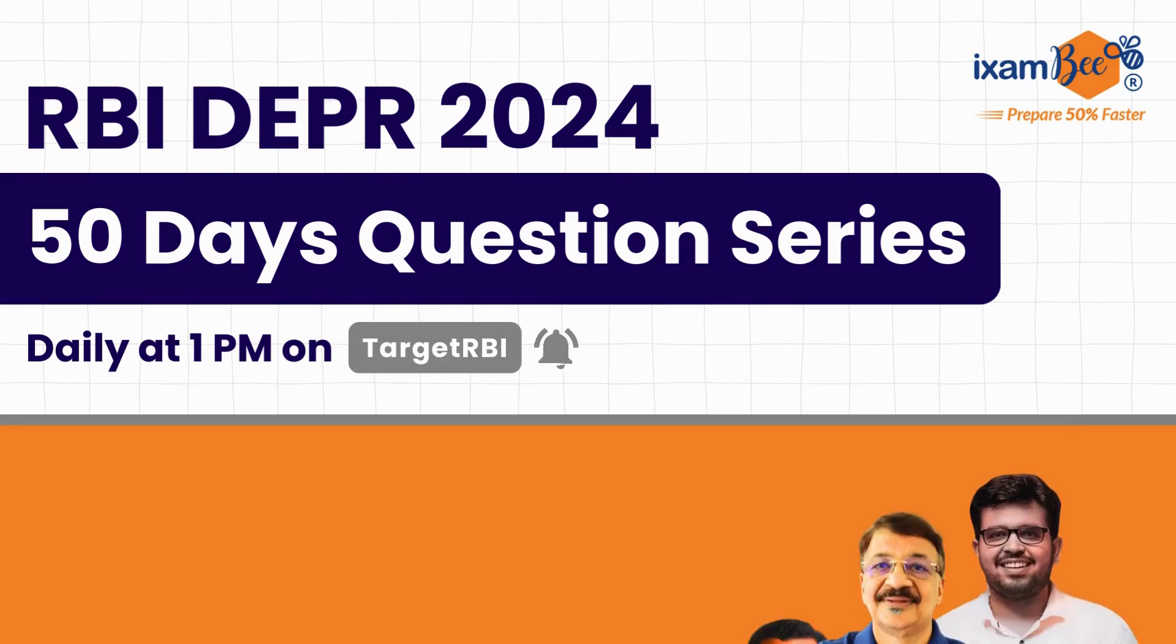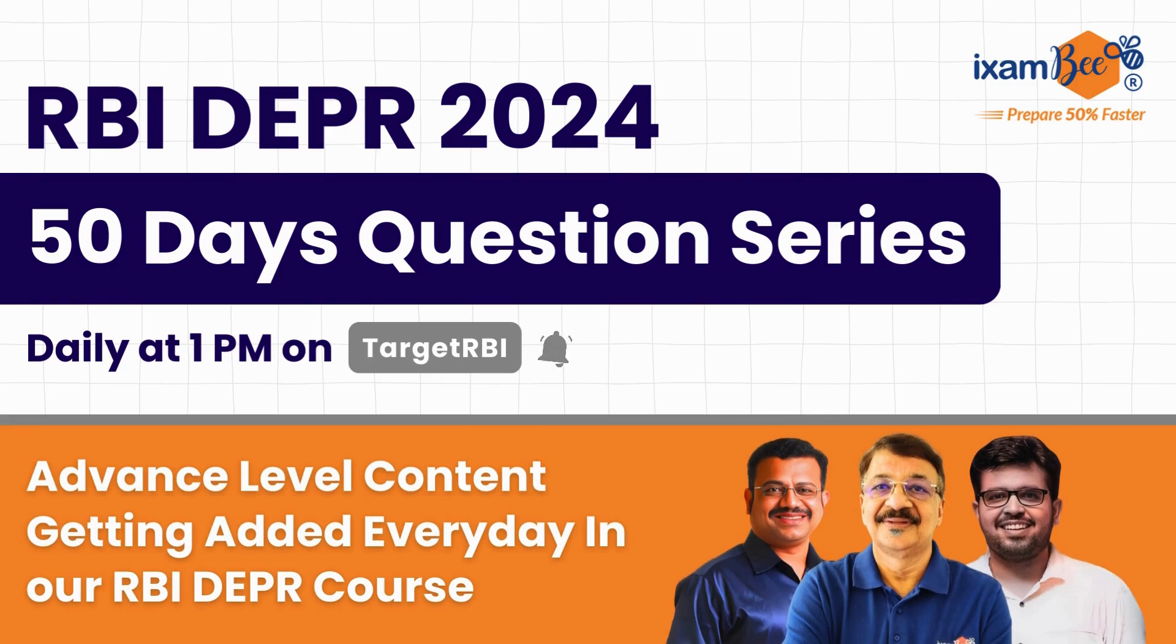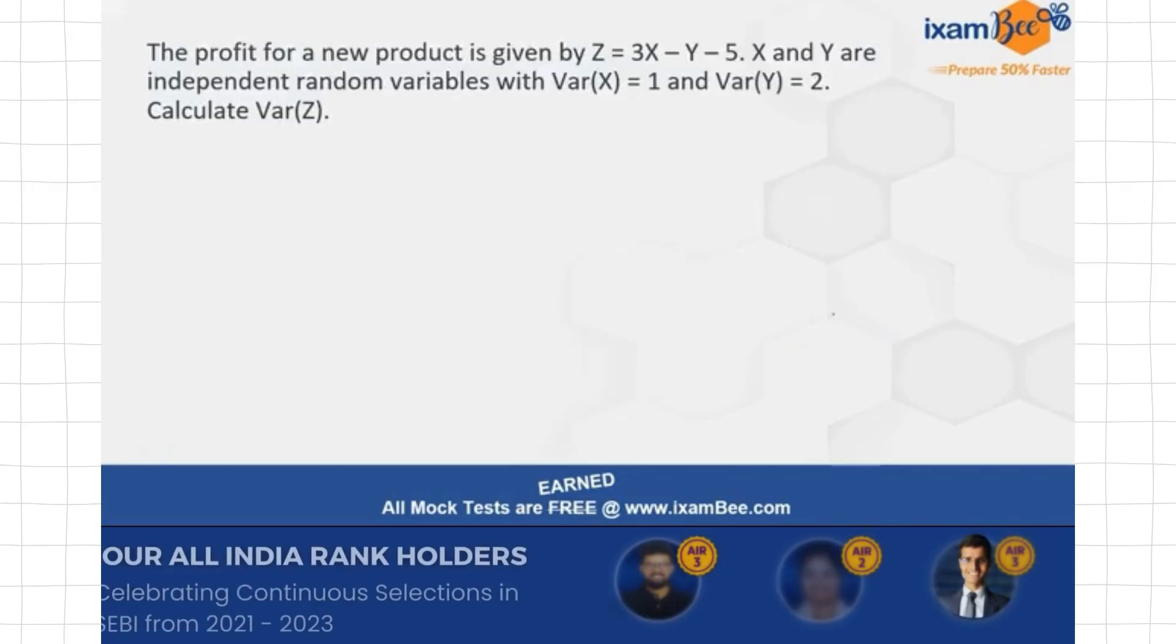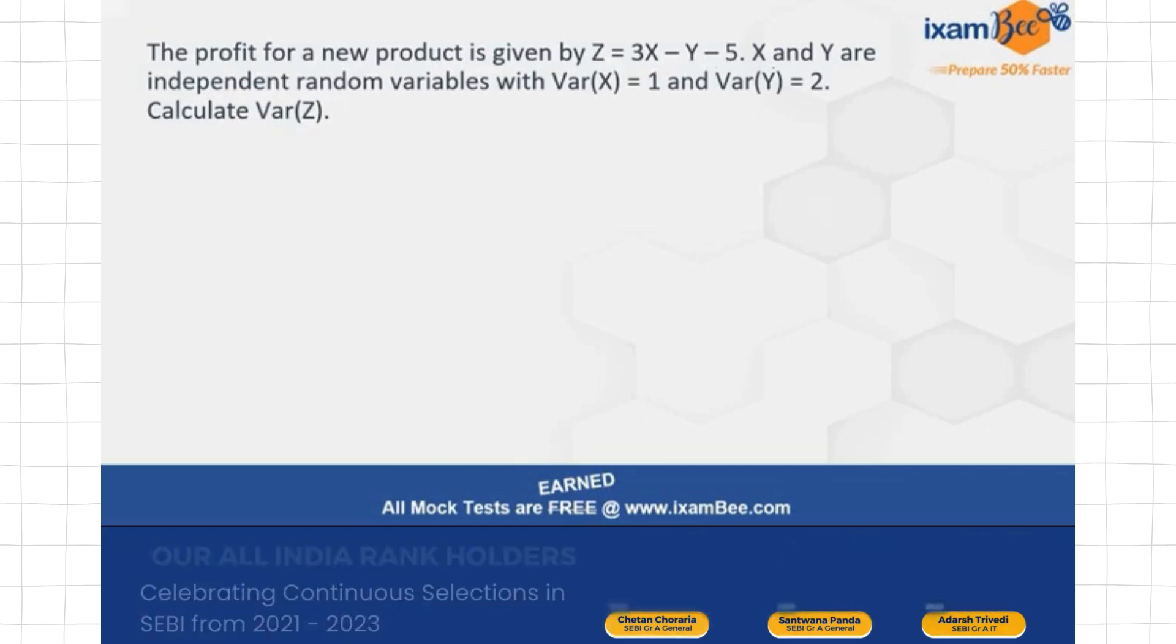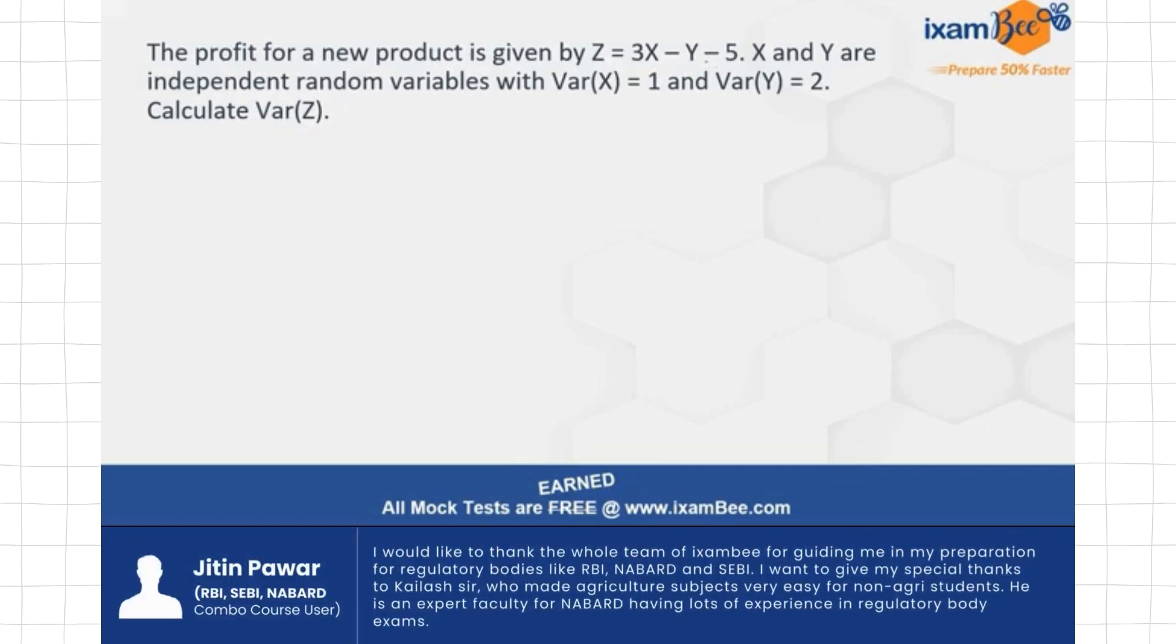We are here on day number 13 in the series and the question for today is: the profit for a new product is given by Z which is a function of X and Y which is 3X minus Y minus 5. And it's also known that X and Y are independent random variables with variance of X equal to 1 and variance of Y equal to 2. You have to calculate what will be the variance of Z.